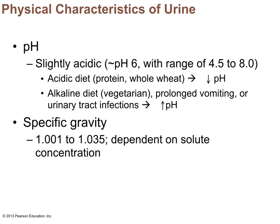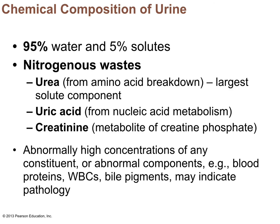The pH of urine is approximately 6, with a normal range of 4.5 to 8; diet can alter urine pH. Specific gravity reflects solute concentration of urine. Urine is 95% water; the other 5% is solutes. The three major nitrogenous wastes are: urea (breakdown product of amino acids through the urea cycle in the liver), uric acid (byproduct of nucleic acid metabolism), and creatinine (metabolite of creatine phosphate).